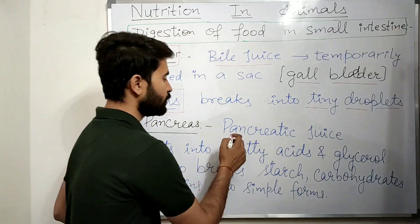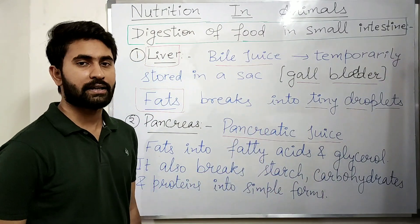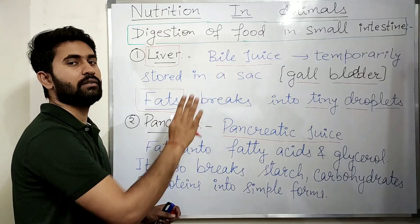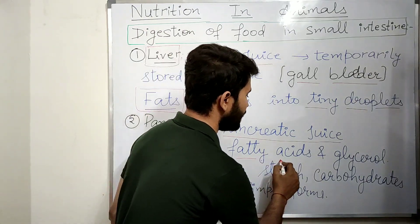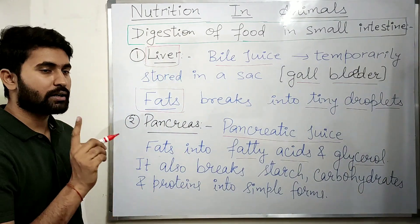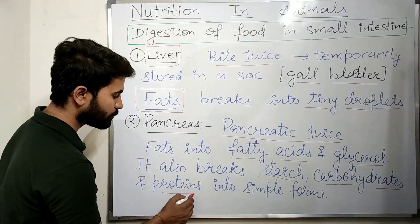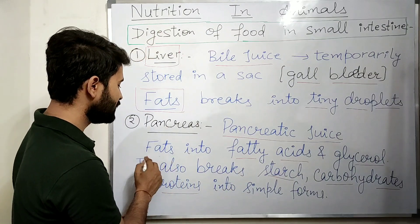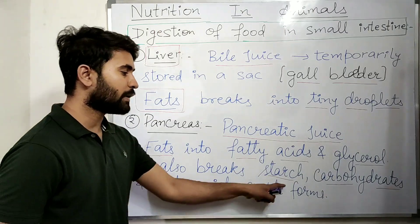Our pancreas releases pancreatic juice. It performs two functions: first, it converts fats into fatty acids and glycerol; and second, it also breaks starch, carbohydrates, and proteins into simple forms.